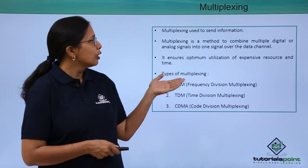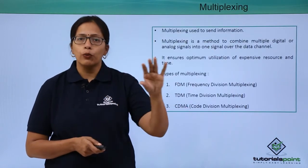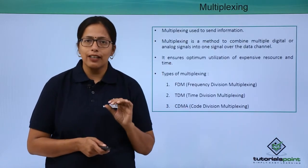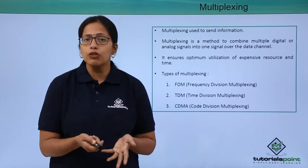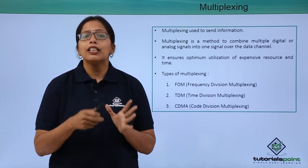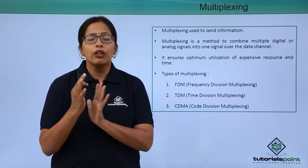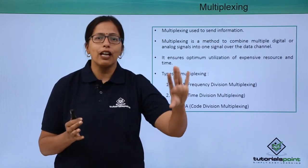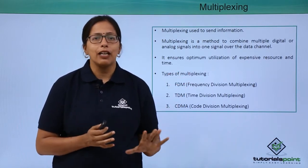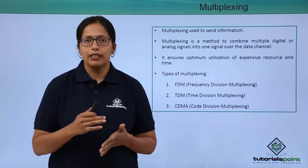Multiplexing is used to send information over that wireless network. Why is multiplexing used? So that the infrastructure can be used efficiently — more data can travel at the same time.